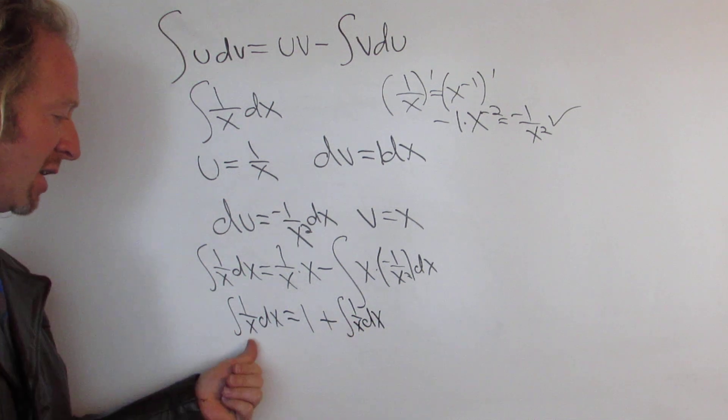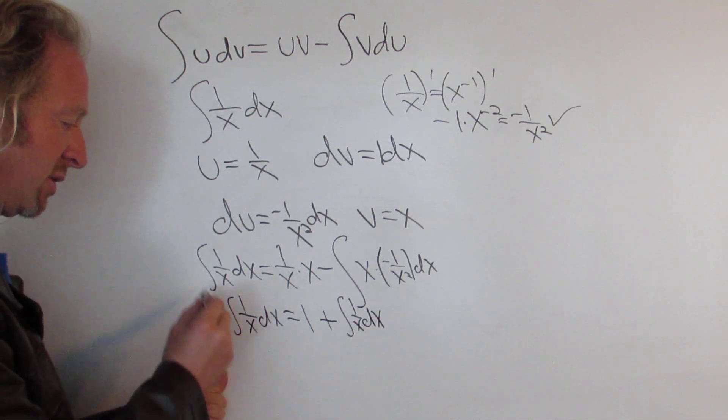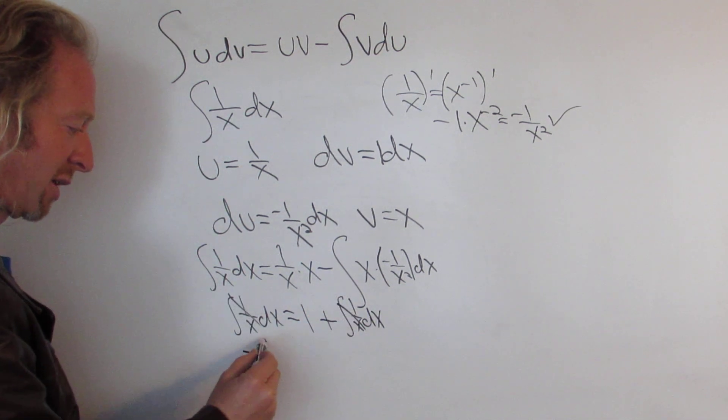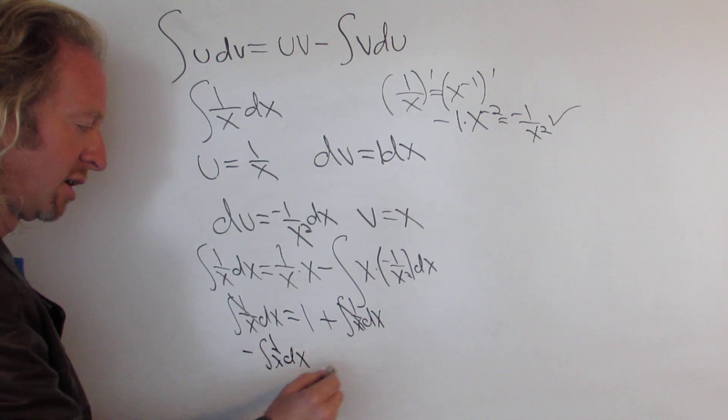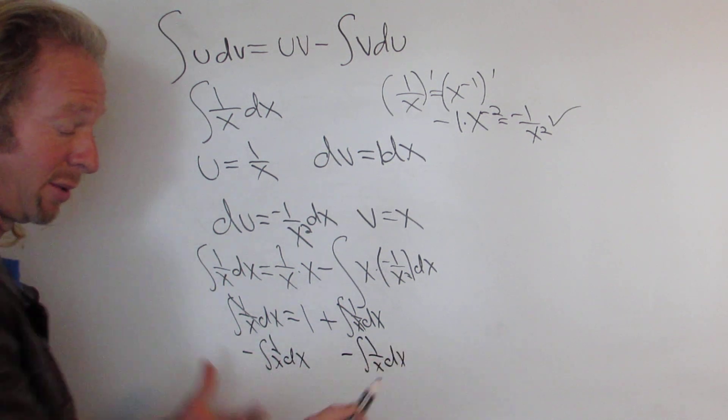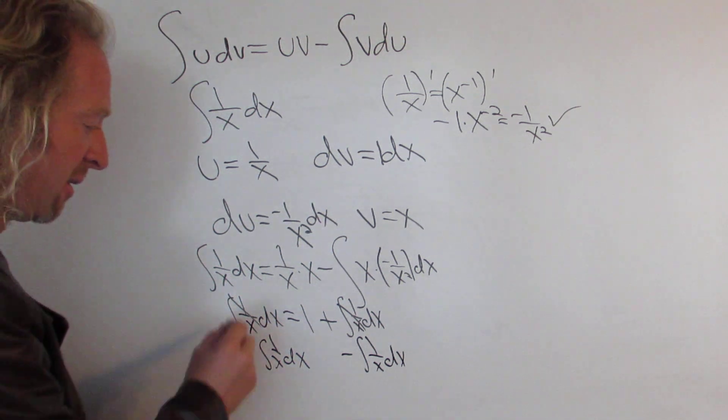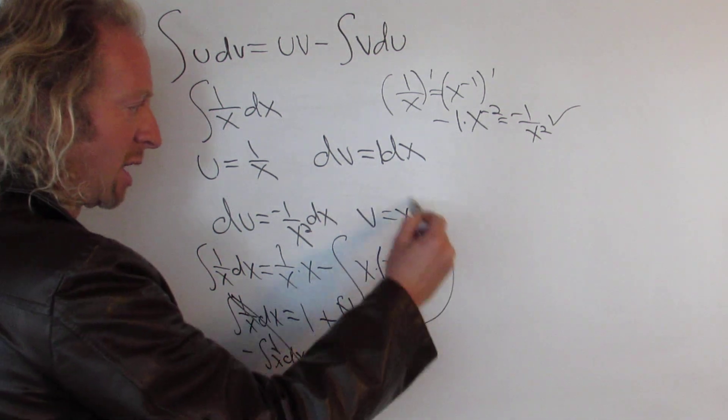Look at that! You can just subtract this from both sides, so these cancel, right. Just subtract the integral of 1 over x dx from both sides. We can certainly do that, you can subtract stuff from both sides in math. When these cancel you get 0, so you end up with 0 equals 1.